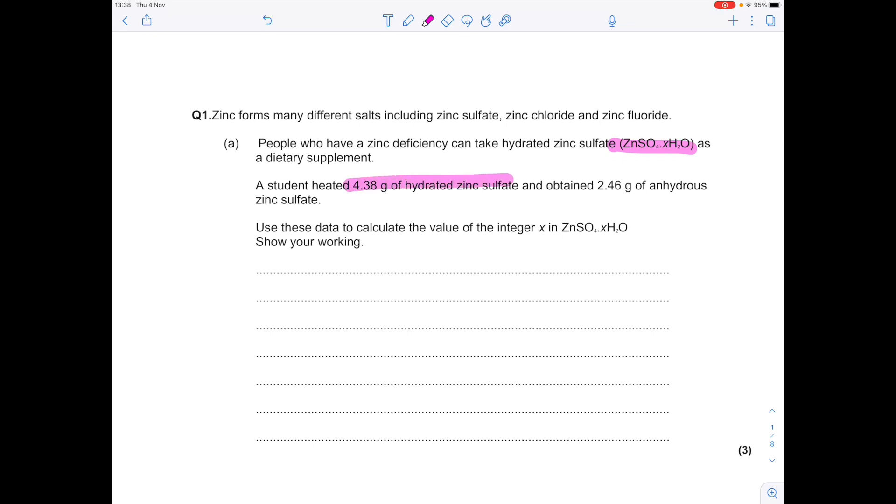A student heated 4.3 grams of hydrated zinc sulfate and obtained 2.46 grams of anhydrous zinc sulfate. Use these data to calculate the value of the integer x in this. Show your working and it's worth 3 marks. So I like using a table format when possible when doing mole calculations. This is basically like an empirical formula calculation. So what you want to do is separate your hydrated zinc sulfate into the zinc sulfate portion and the water portion.